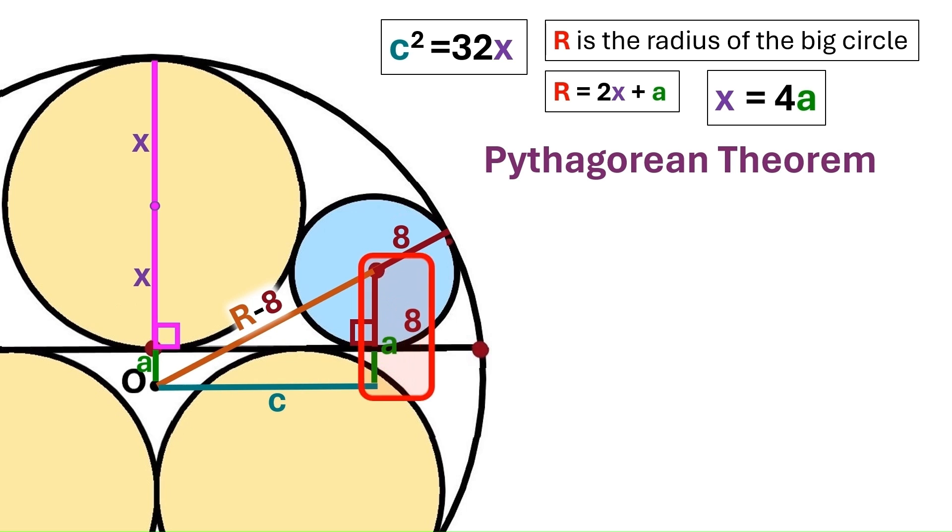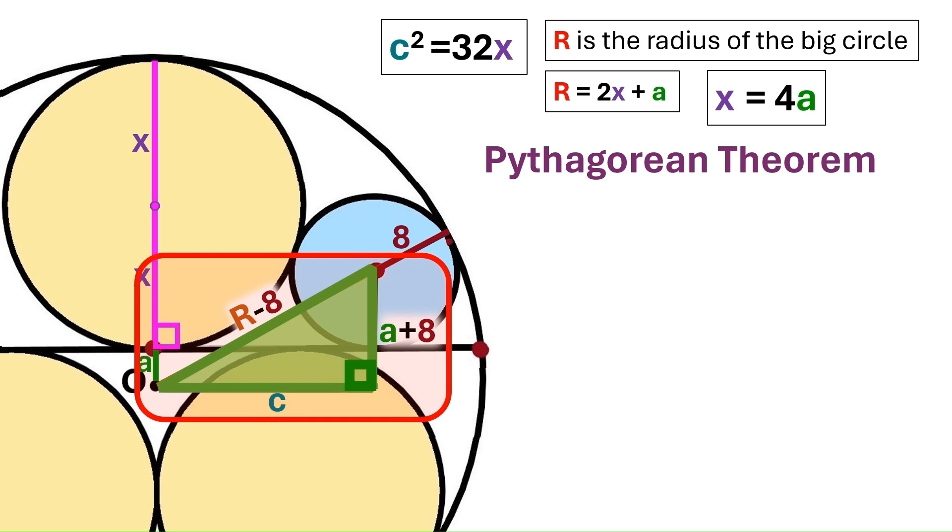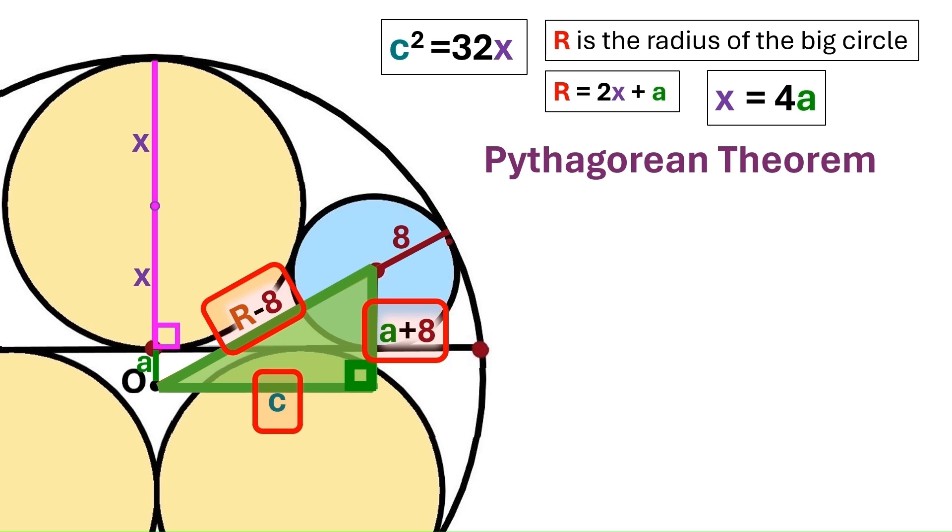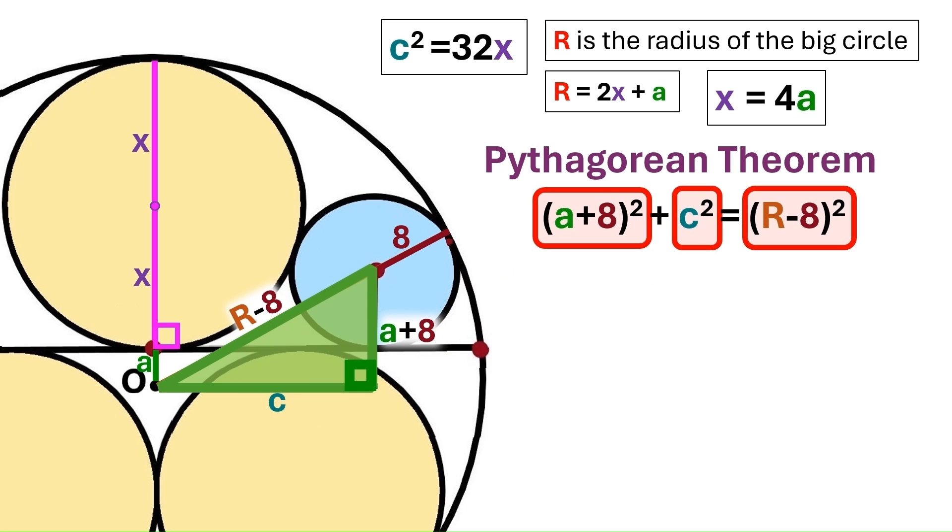And we take this distance a and project it to here. This entire distance becomes a plus 8. And these two lines are parallel. So these two angles must be the same. And this one's also 90 degrees. We've got a right triangle here. That means we can use the Pythagorean theorem.